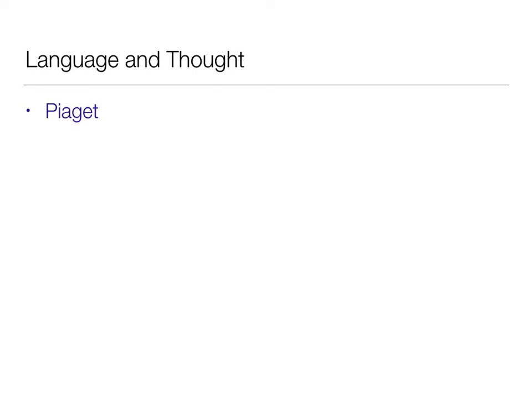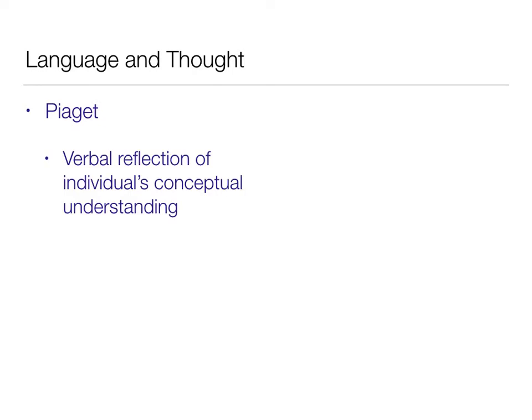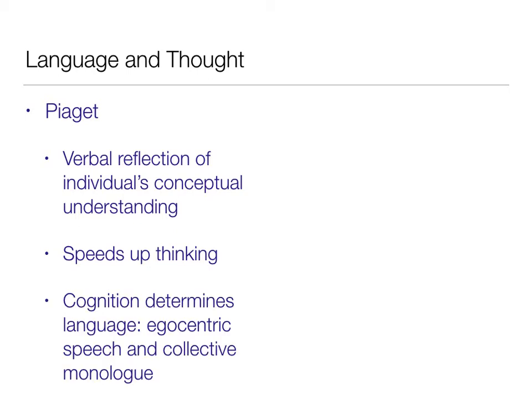On language and thought, Piaget said that verbal ability was really a reflection of the individual's conceptual understanding of what was going on. Language was a direct reflection of the mental processes occurring. He said language was a way to speed up and organize thinking. Cognition determines language — the thought comes first, the language comes after. He said this was evident in egocentric speech and collective monologues.